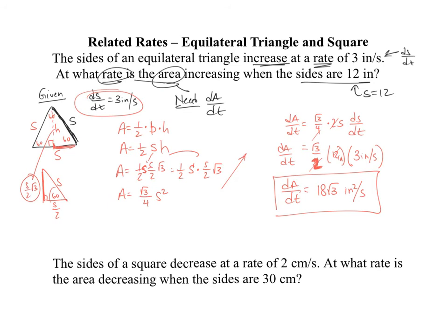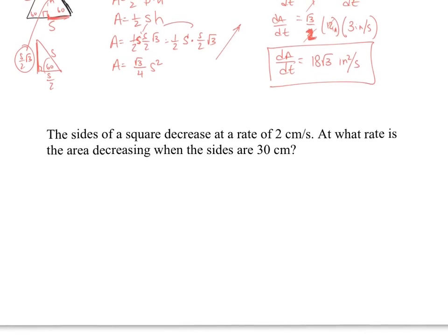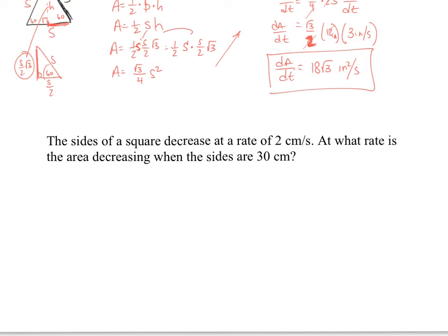All right. Let's take a look at the second problem. So in the second problem, we have the sides of a square are decreasing at a rate of 2 centimeters per second. So here's my given again. And I have a square. And these sides are decreasing at 2 centimeters per second. So I made it negative. And that's going to be my ds/dt, assuming I call these sides s. So we want to know what rate is the area decreasing when the sides are 30. So we need dA/dt. And here we're given the sides are 30. So s is 30.